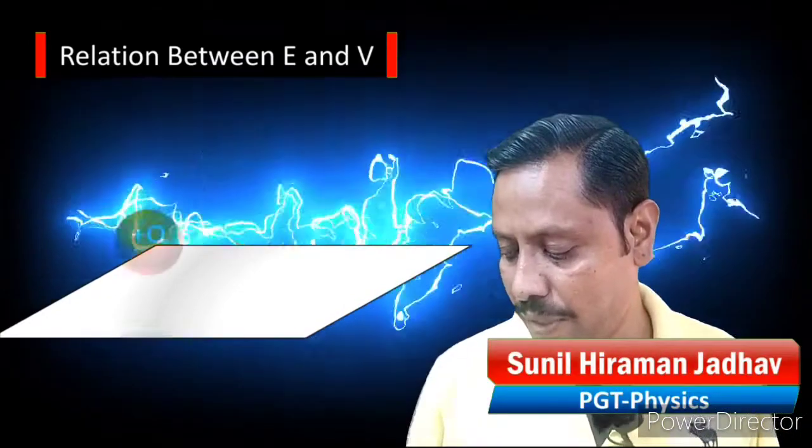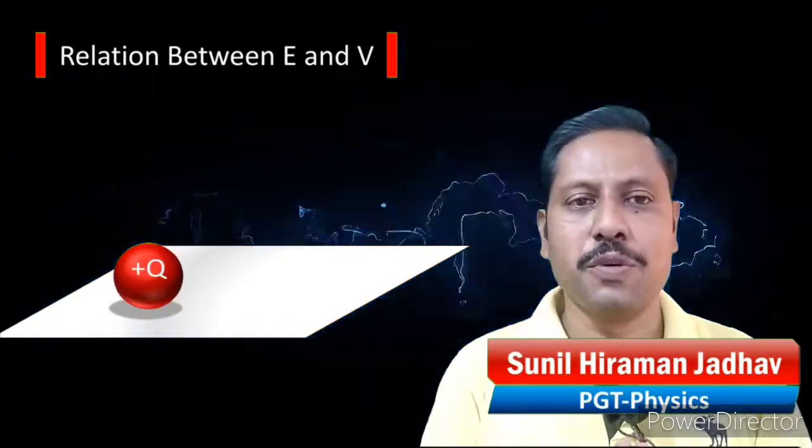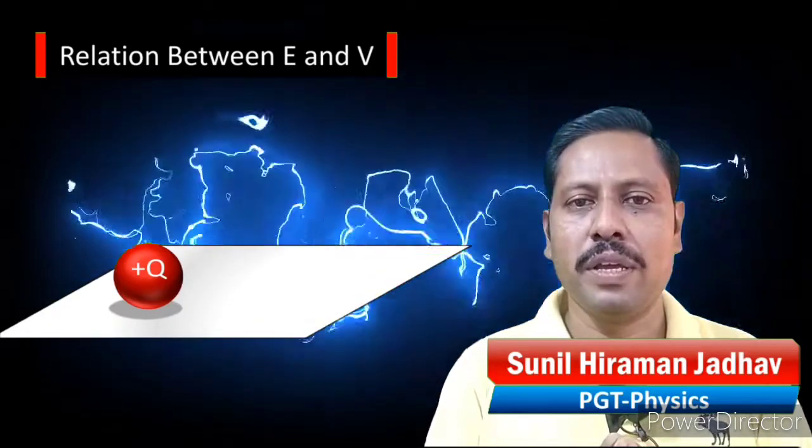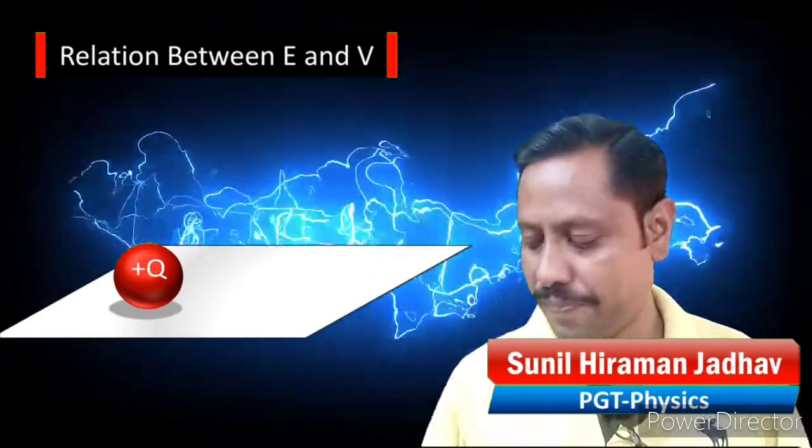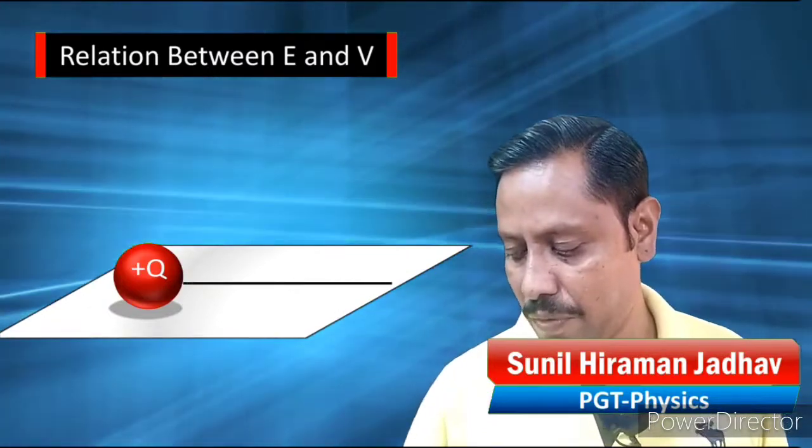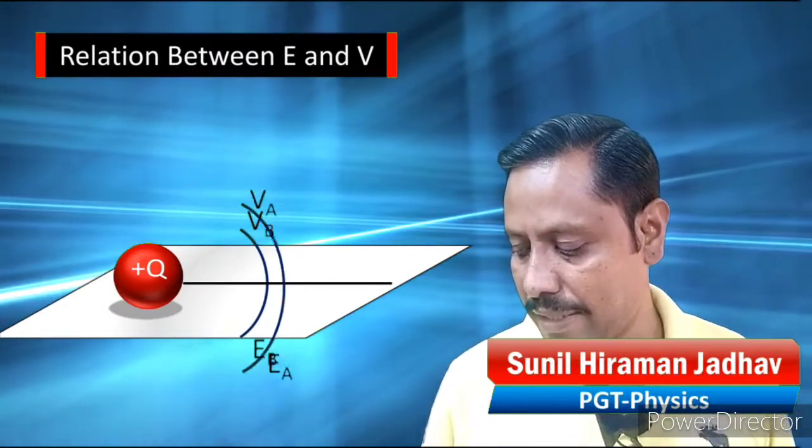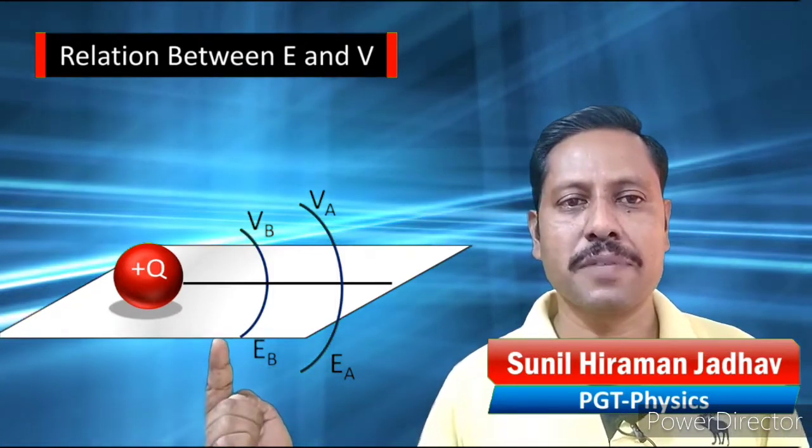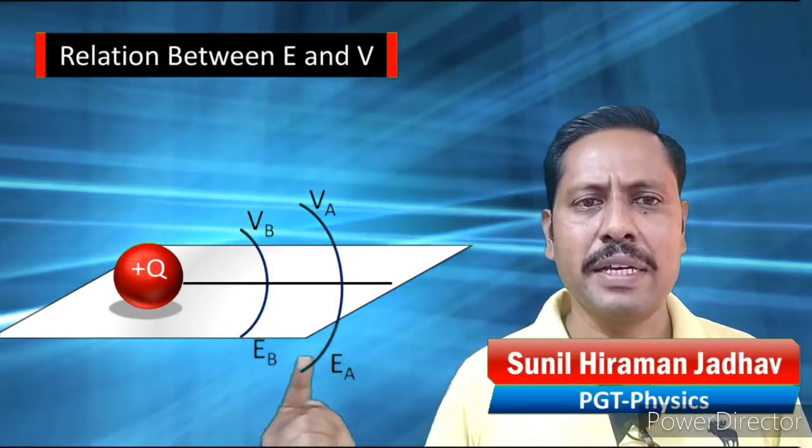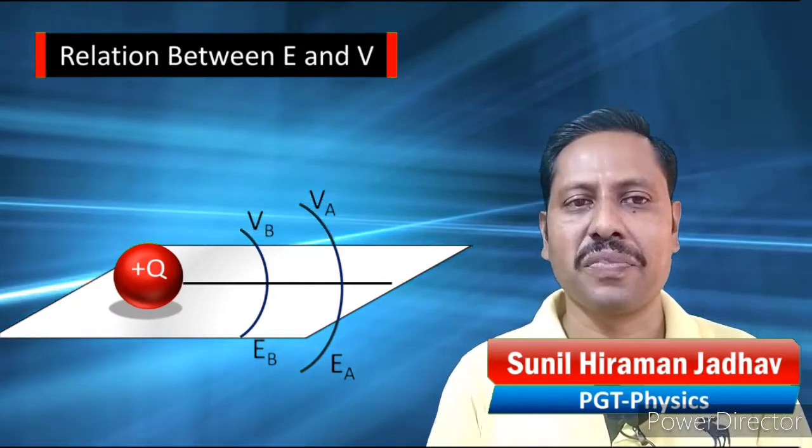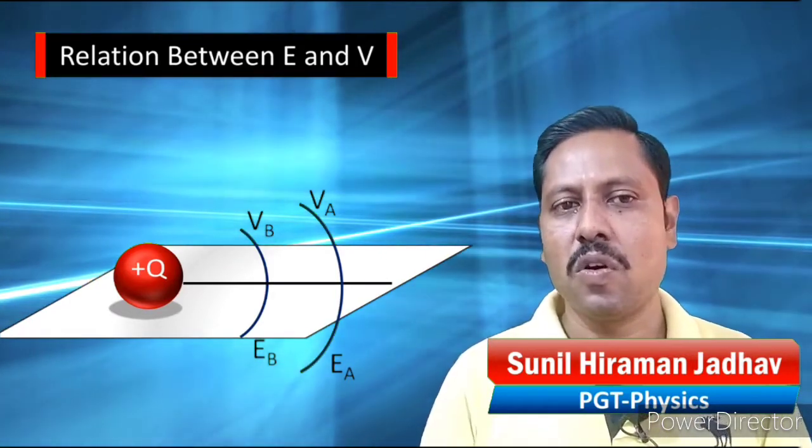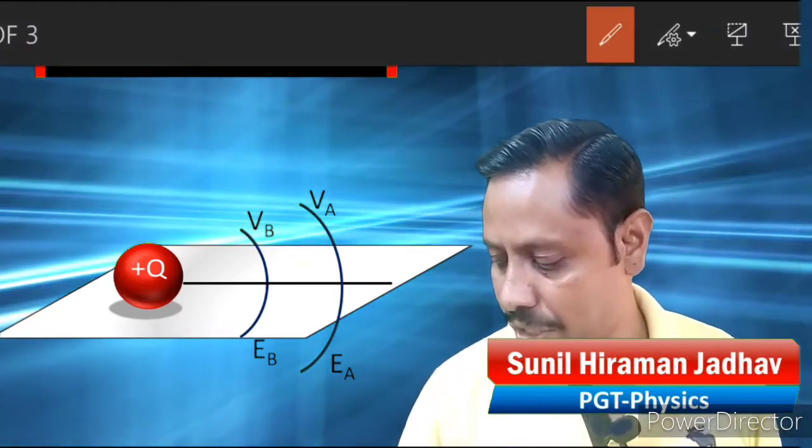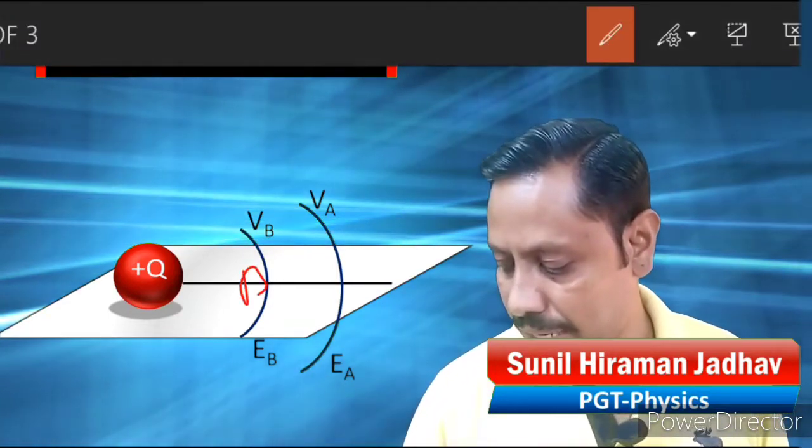Let us say, for example, we are having a charge plus Q here, and from that charge plus Q, we are going at two different locations as shown here along this line. Let us say the points are B and A. Point B is closer to the charge and point A is slightly away from the charge.